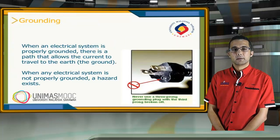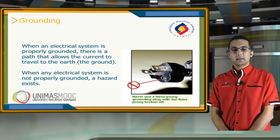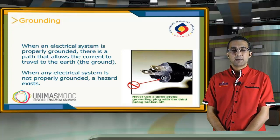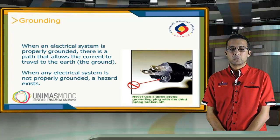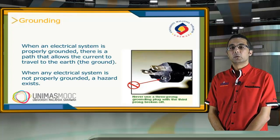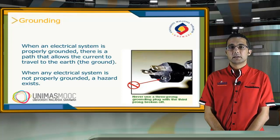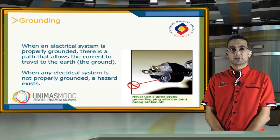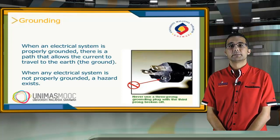Grounding. When the electrical system is properly grounded, there is a path that allows the current to travel to the earth. This protects both workers and the devices.